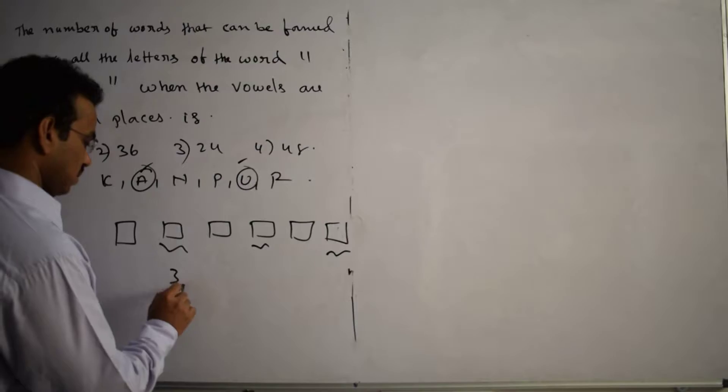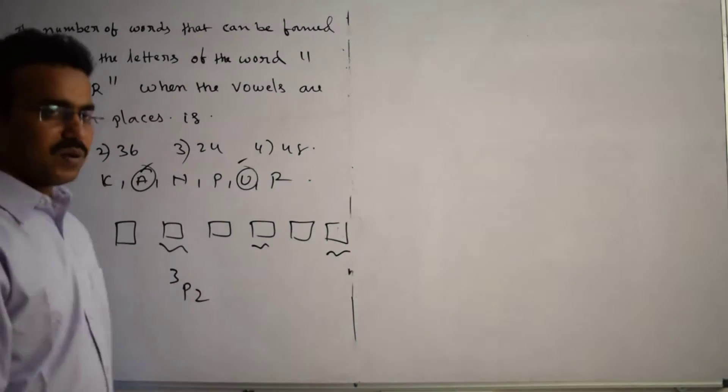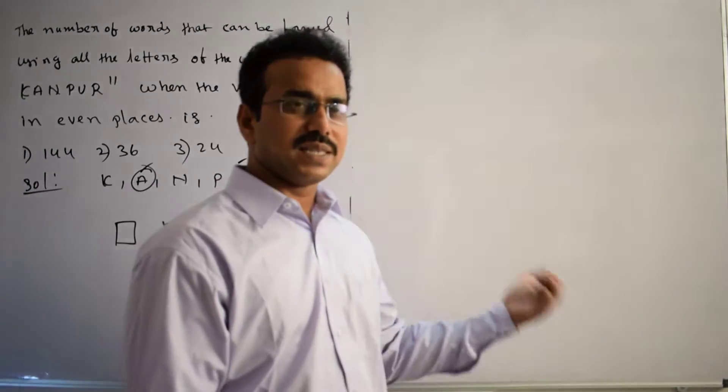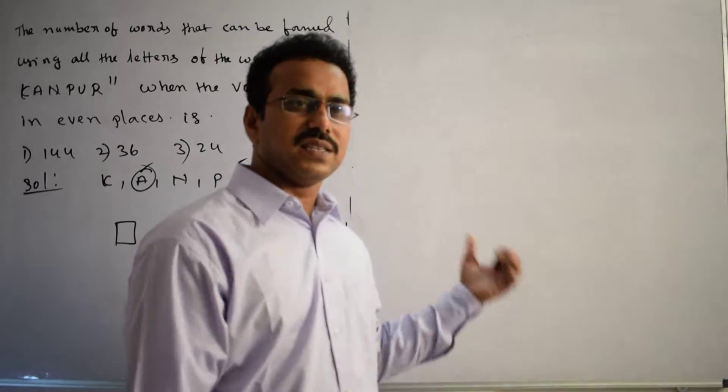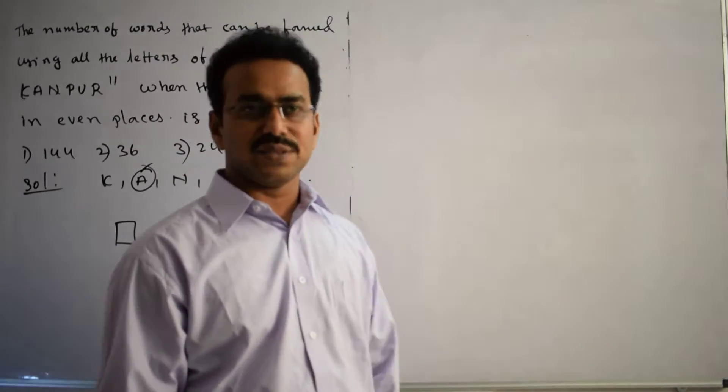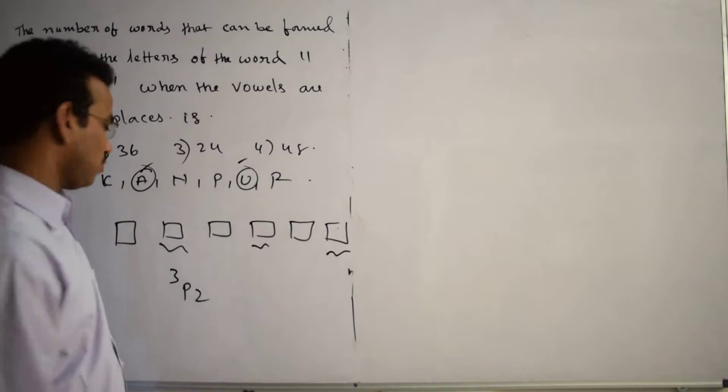Now 2 letters I filled. What about the rest of the letters? Rest of the letters don't have any constraint. So 4 letters are there, 4 boxes are there. So 4 factorial ways I can fill.